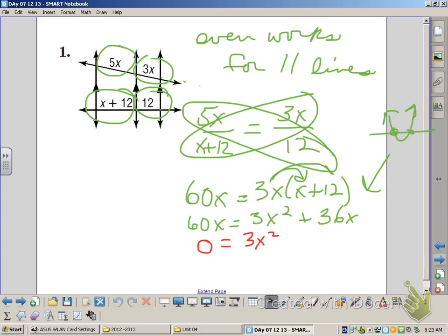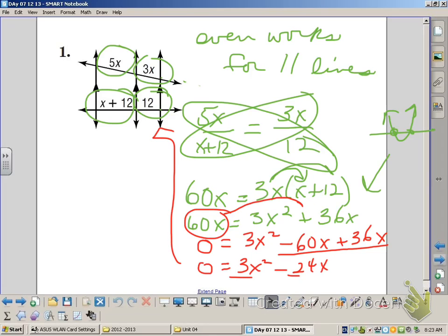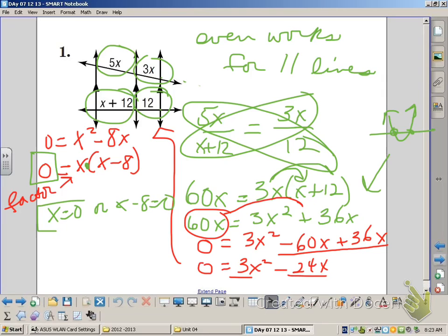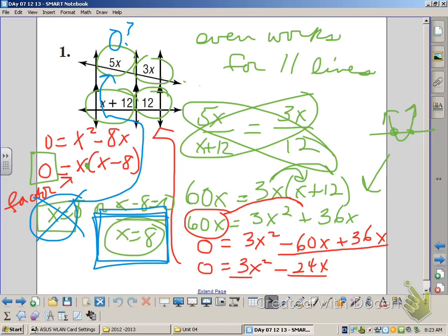This turns out to be a quadratic equation, so we need to make it equal to 0. We combine our like terms, factor out common factors, and we find out that X can either be 0 or 8. 0 doesn't work in the problem because we can't have a side that's 0, so the answer is 8.